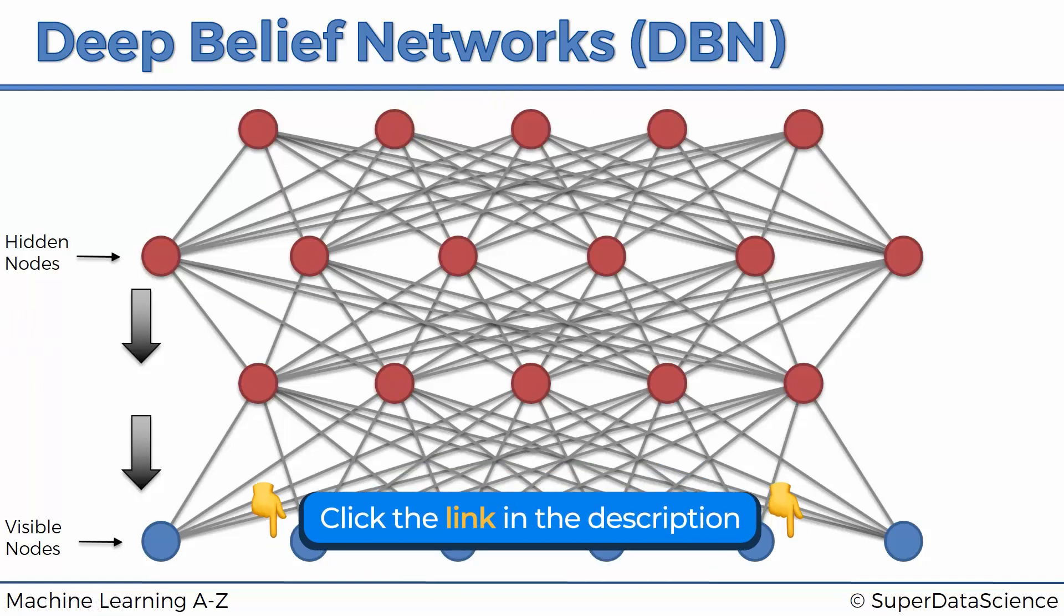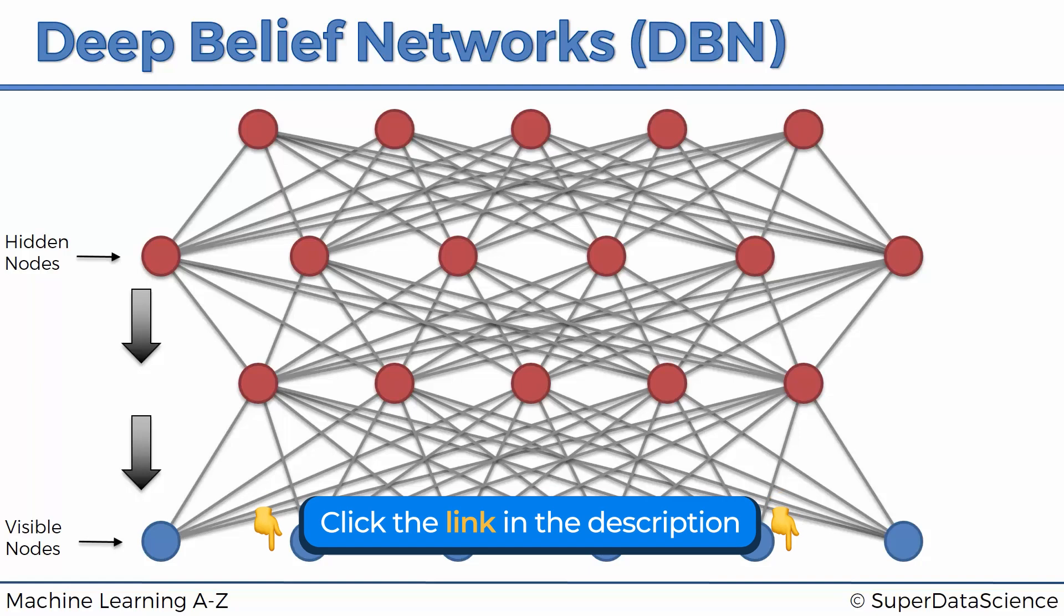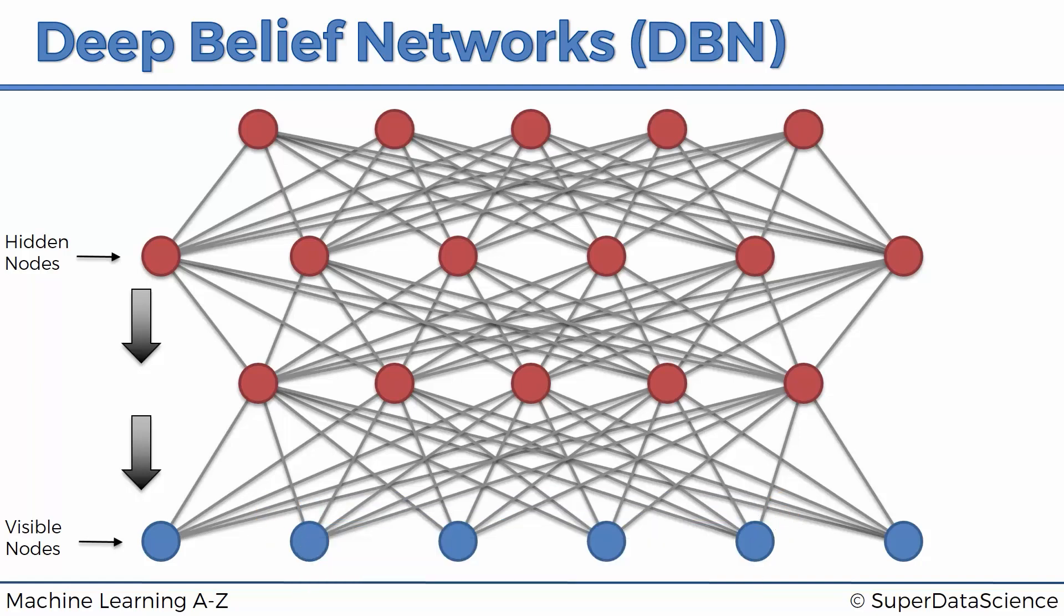It's quite hard to explain what's going on here because this is a very complex, very advanced type of network. These deep belief networks is what revived the interest in deep learning in the 2000s. Hinton and his team came up with these deep belief networks, and when that happened, that's when the whole interest in deep learning got revived.